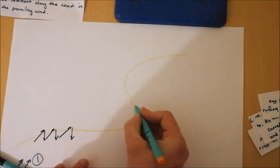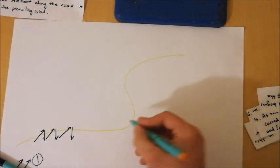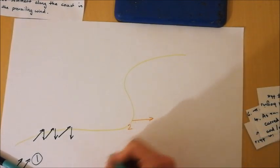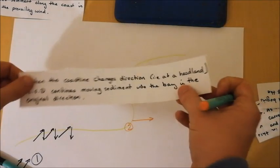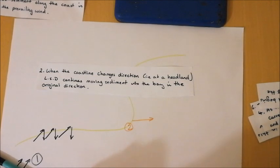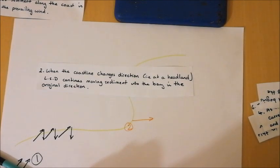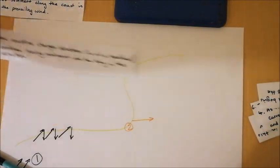So longshore drift will carry on in this direction here. Again what we can do, we can put a number two there. And then we can do an annotation with that sequence. So when the coastline changes direction at our headland, longshore drift continues to move sediment into the bay in the original direction that it was moving in. And again, we can then move that off to the side and make sure we have that sequence.